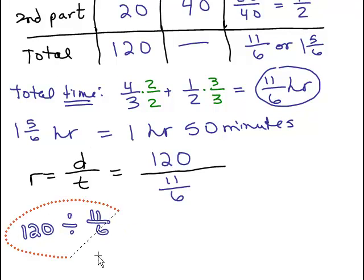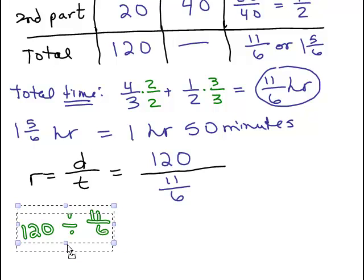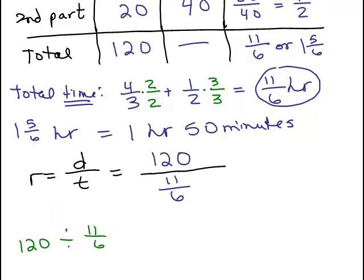I'm going to change colors here just so we're not running into the top. All right, which is the same thing as 120 over 1 times 6 elevenths and 11 doesn't cancel into anything so you're just going to have to multiply that out, that's 720 elevenths.